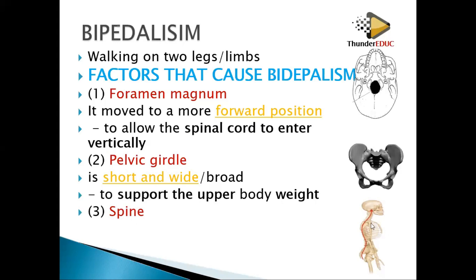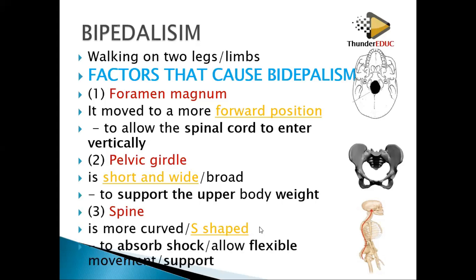The third factor is the spine, the vertebral column. The spine is more curved — S-shaped. If it is more curved, it can allow compression. When you jump from a high point to a low point, you don't just land straight; you absorb the impact. The curved spine absorbs pressure from above so that you can stand upright, allowing flexibility during movement and shock absorption.